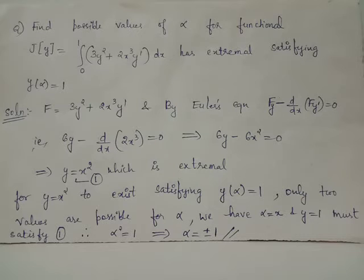We have capital F is the function 3y² + 2x³y'. By Euler's equation we have Fy - d/dx(Fy') = 0.